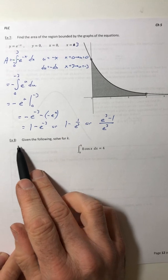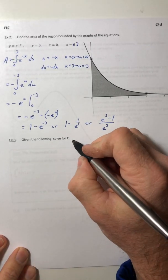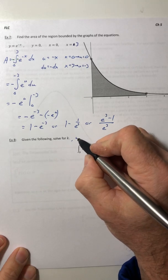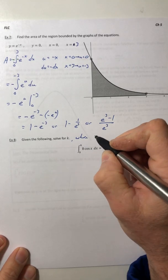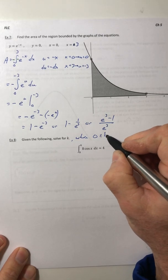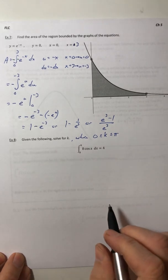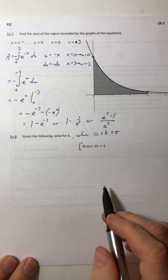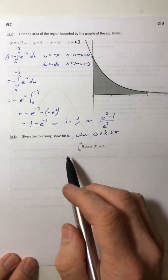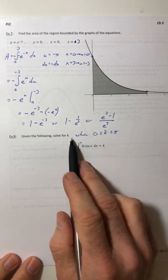All right, so example 8, the last one in this section. Give them the following solve for k. And I forgot to put in where 0 is less than or equal to k, which is less than or equal to pi. No matter how many times you edit, there's always something wrong. Okay, so we've got this restriction.